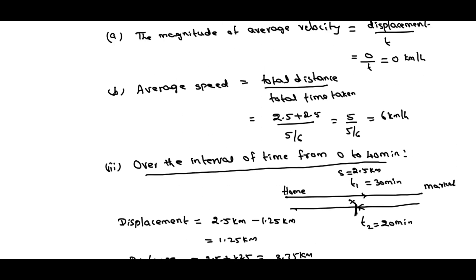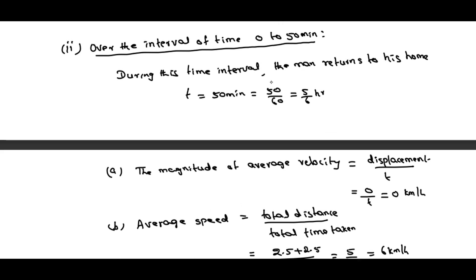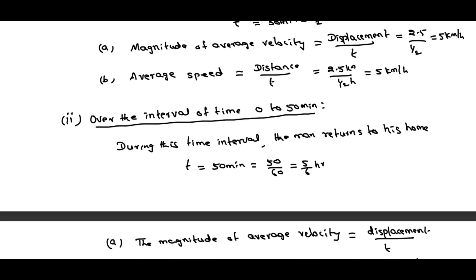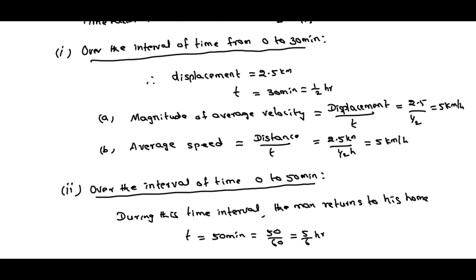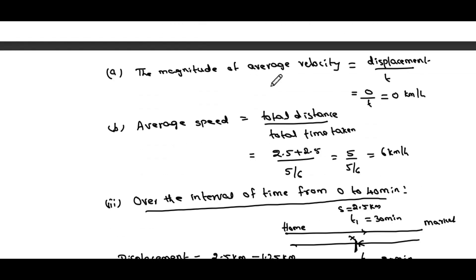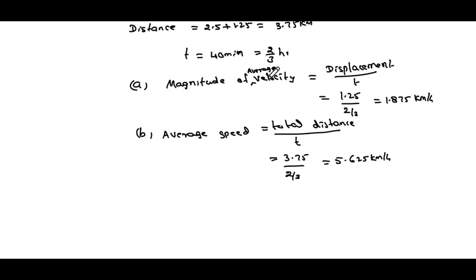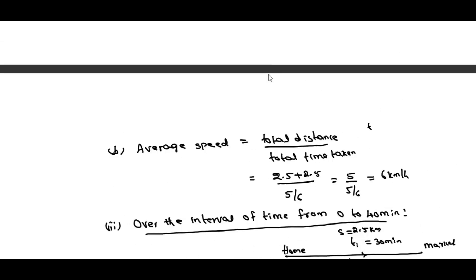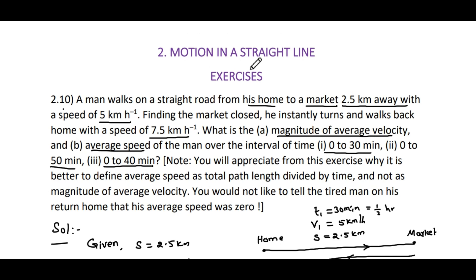So these are the magnitudes of average velocity and average speed in the time intervals 0 to 30 minutes, 0 to 50 minutes, and 0 to 40 minutes. If you are feeling that these solutions are helpful for you, kindly subscribe the channel. Thank you.